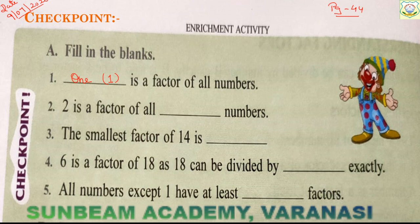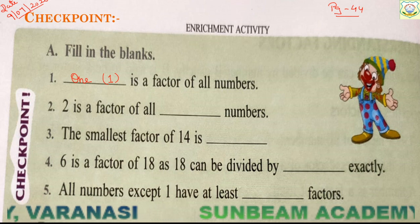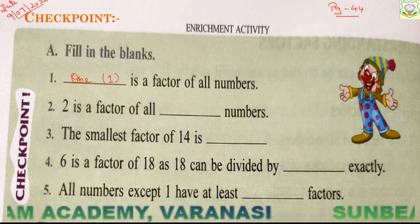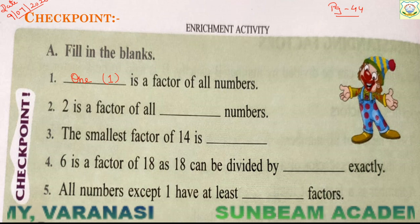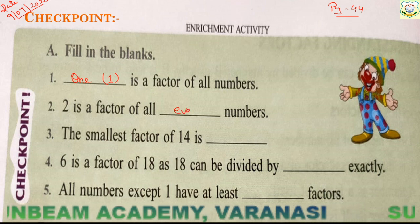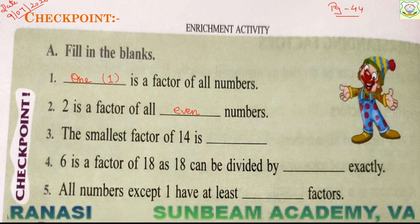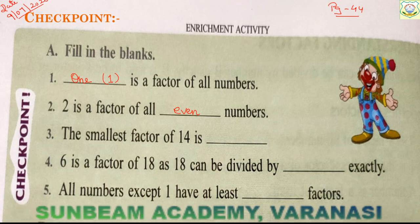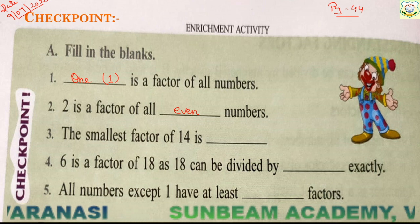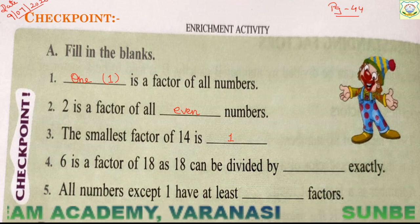Next: 2 is a factor of all dash numbers. Tell me — 2 is a factor of all even numbers. Write 'even numbers' here. Next: the smallest factor of 14. The smallest factor of 14 will be 1. And if we talk about multiples, then it will be 14.